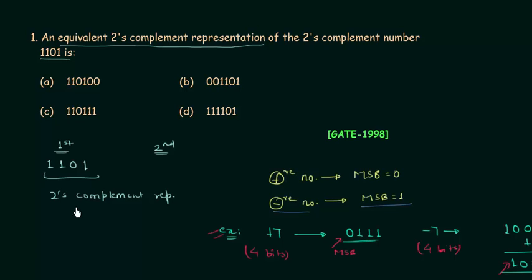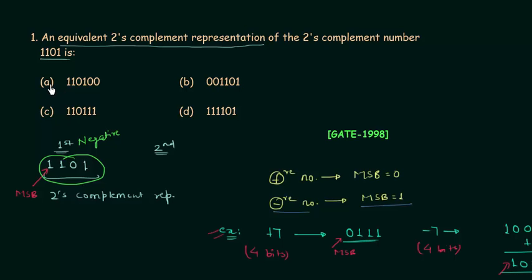Now we will move to the problem. 1101 is the number in 2's complement representation and the MSB is equal to 1, so this is a negative number. We have to find 1101 in the options. In option A we have 0100, so option A is not correct. In option B we have 1101, so option B is a candidate.